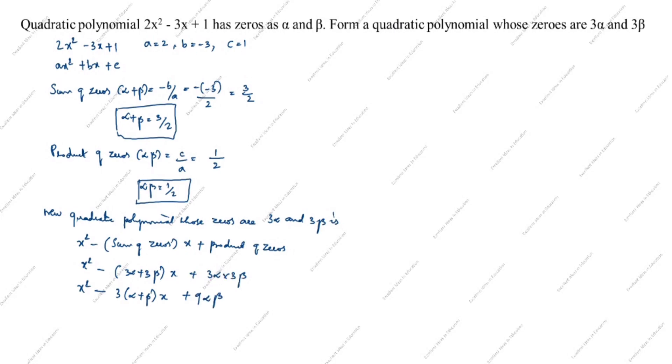What is alpha plus beta? Alpha plus beta equals 3 by 2. What is alpha beta? Alpha beta equals 1 by 2. We will substitute these values into the expression.